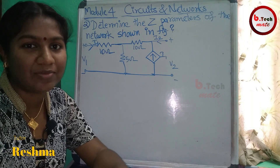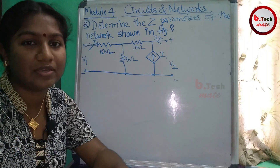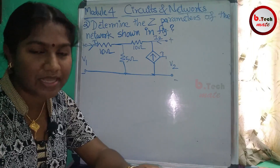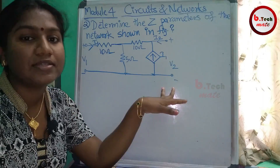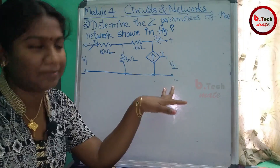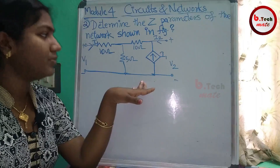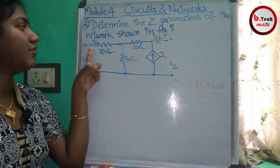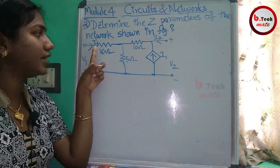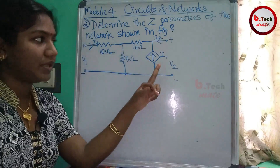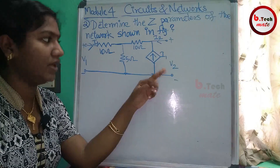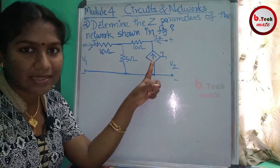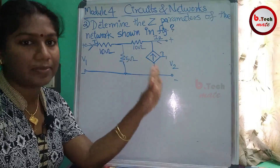Welcome to the next lesson. The problem involves Z-parameters with a dependent source. We have independent sources, and now we introduce Z-parameters with a dependent source. This is a network problem. The dependent source is I1, marked as I1 — this is not the input port. The current source is I1, and the voltage source is plus or minus. This is a current-dependent source.